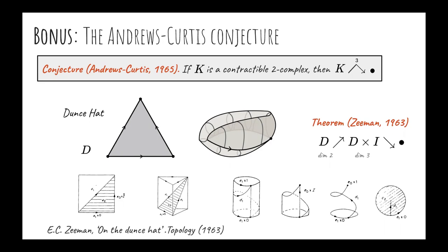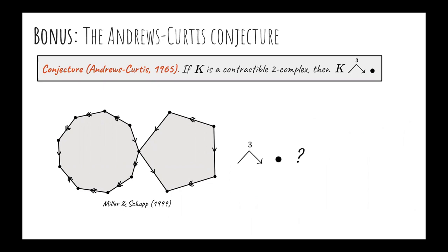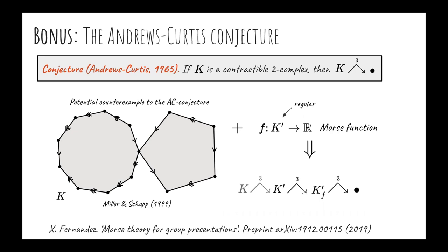Here's another example of a contractible complex of dimension 2. In this case, it was not known if it's possible to simplify it to a point through a pre-deformation, being this a potential counter-example to the Andrews-Curtis conjecture. Now, using the discrete Morse theory, we can find the Morse function defined in its barycentric subdivision. This is because we need the complex to be regular. And by the previous result, there is a pre-deformation between this complex and the Morse complex. It turns out that in many cases, the Morse complex pre-deforms to a point in a very easy way. And it's true in general that the 2-complex pre-deforms to its barycentric subdivision. Putting all together, we have proved for the first time that this complex satisfies the Andrews-Curtis conjecture.